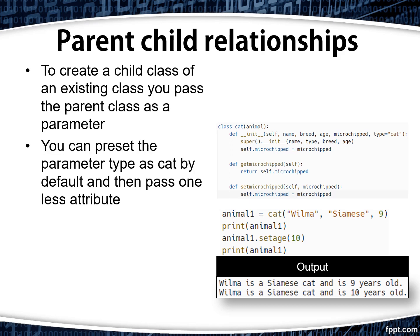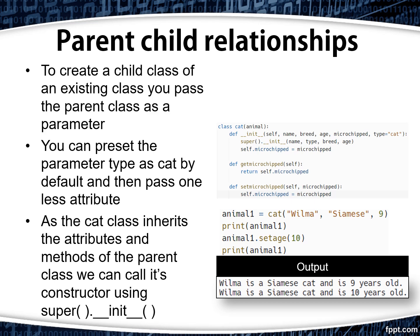As all cats will be of type cat, you can preset the parameter type as cat by default and then pass one less attribute. As the cat class inherits the attributes and methods of the parent class animal, we can call the animal's constructor using super.init. We then handle assigning any extra attributes that only apply to a cat and aren't applied to a general animal object.